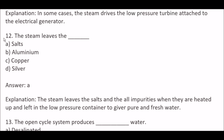Next question: The steam leaves — Option A, salts; Option B, aluminum; Option C, copper; Option D, silver. Right answer is Option A, salts. Because the steam leaves the salts and all impurities when they are heated up and left in the low pressure container, giving pure and fresh water.